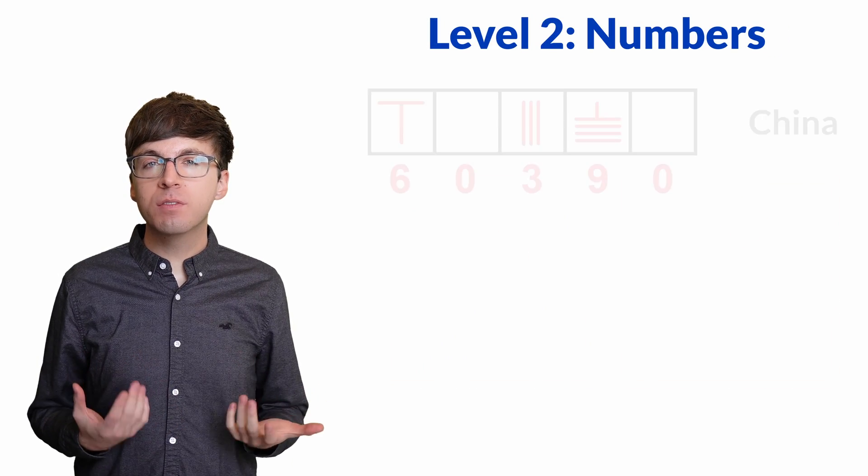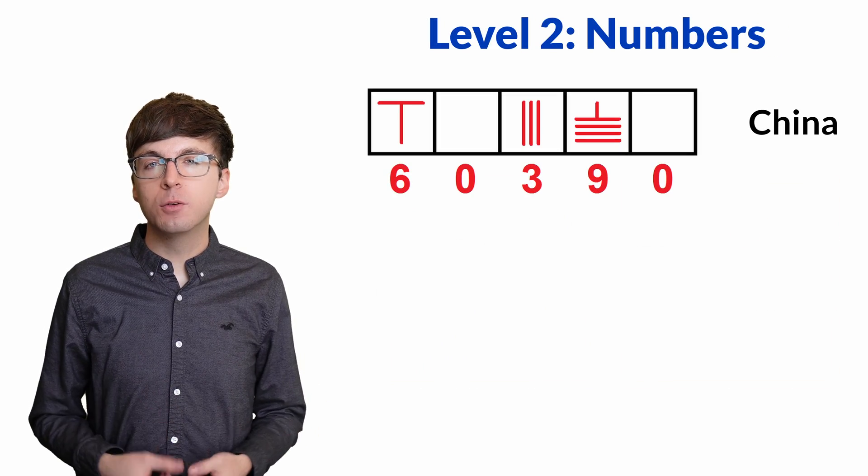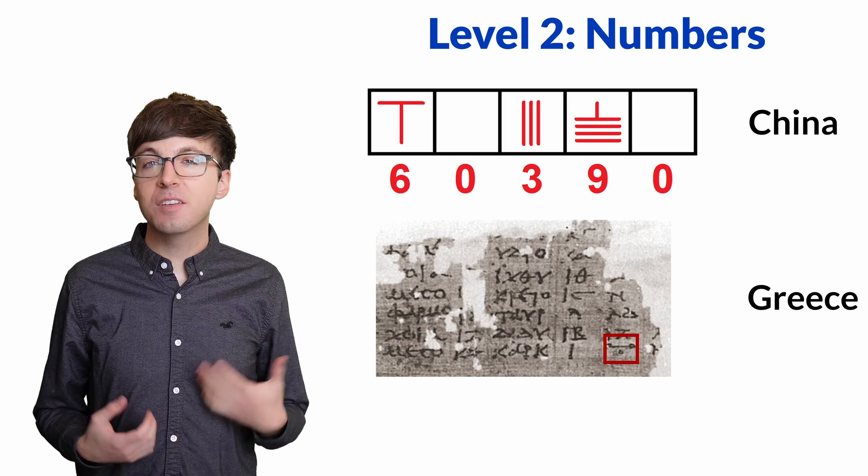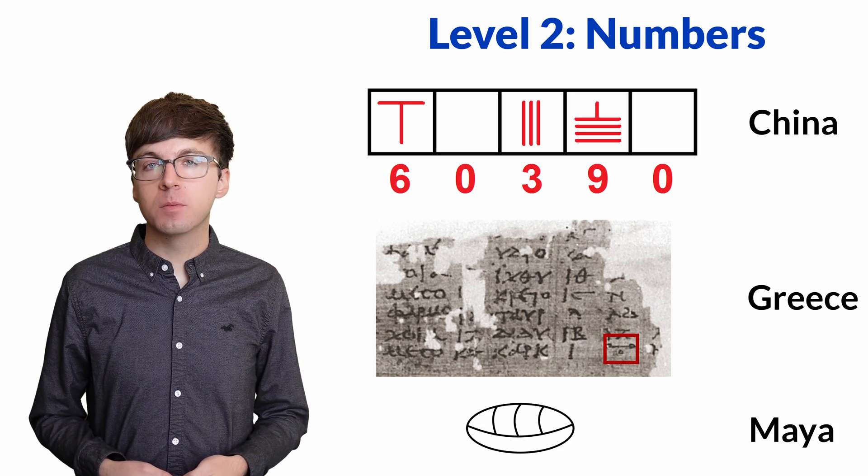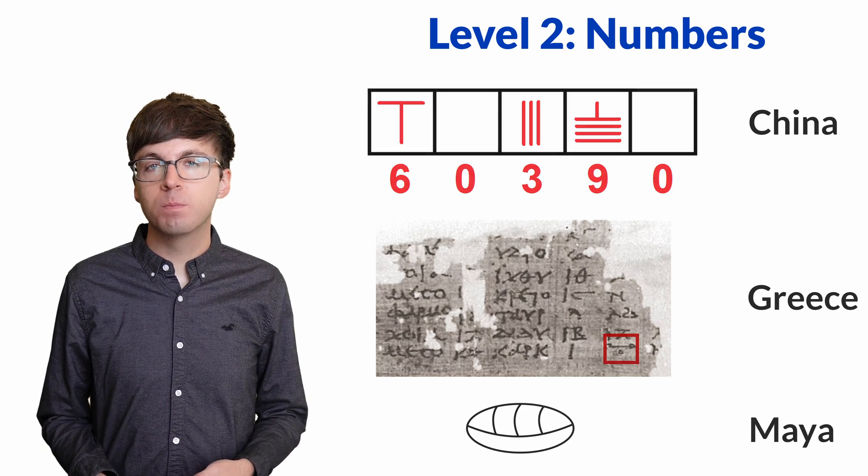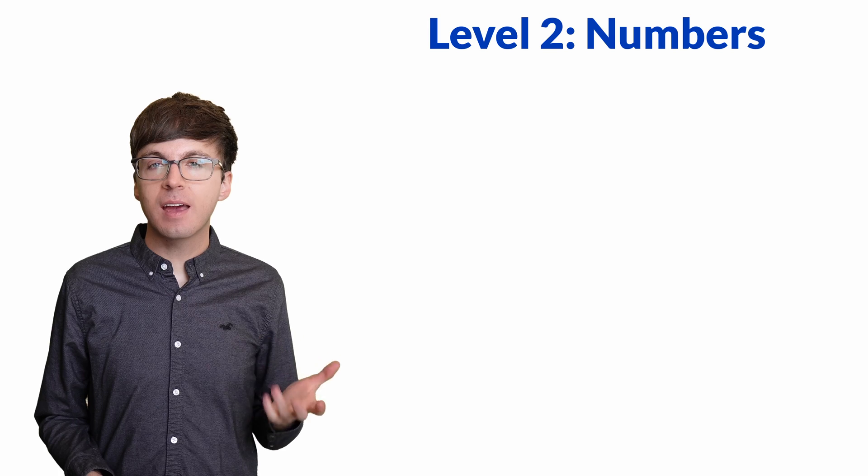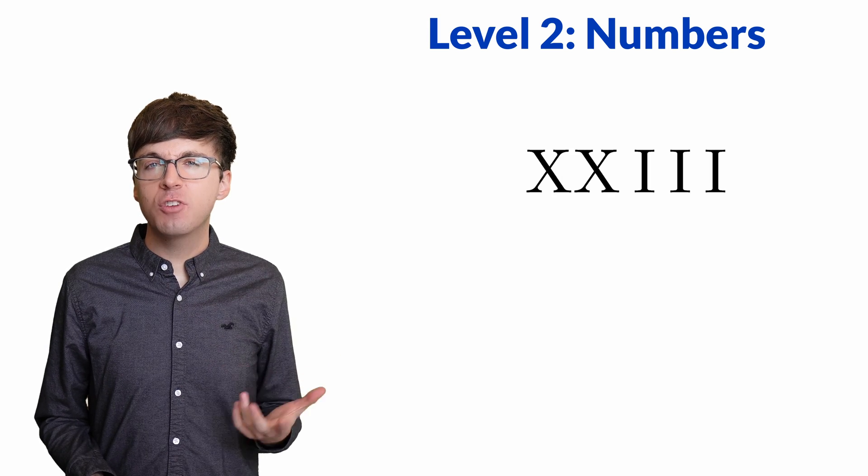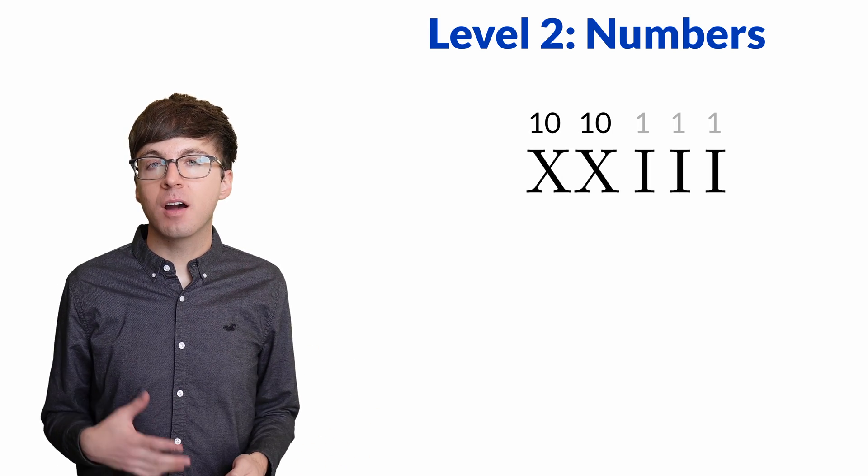For level two, let's look at one of the major reasons zero was utilized in human history, as a placeholder in our number systems. Since we're used to having zeros in our numbers, let's start by looking at Roman numerals. 23 in Roman numerals is XXIII. Each X represents 10, and each I represents 1.